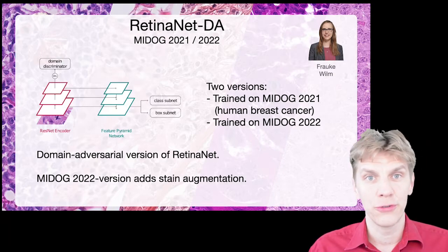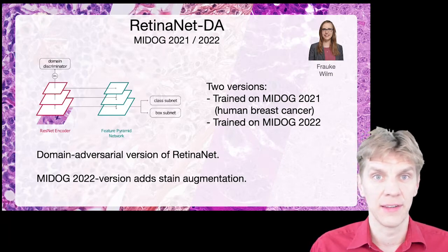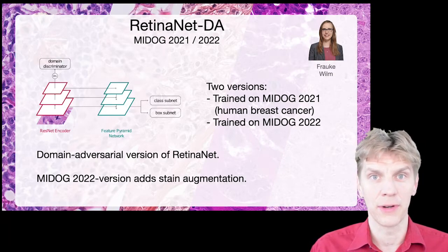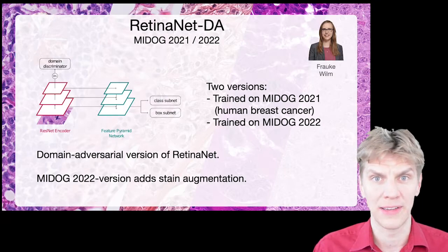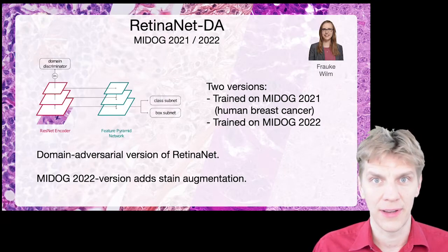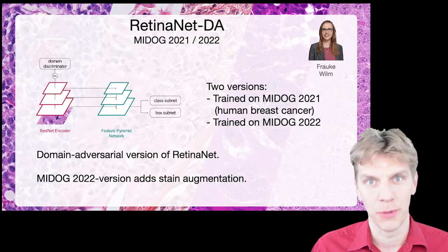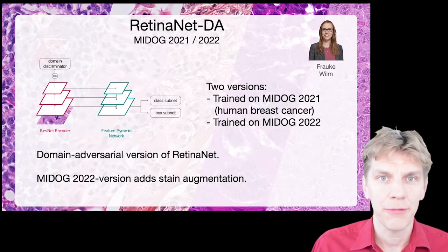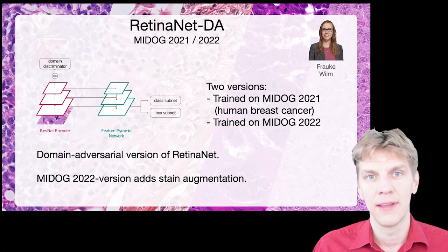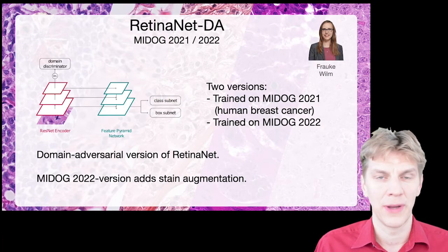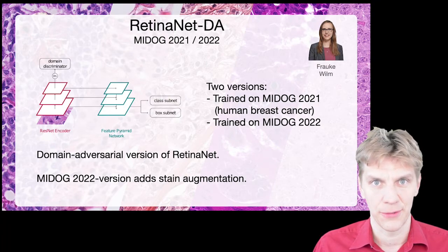We have this in two versions in the baselines. One is trained only on MyDoc 2021, which means it was trained only on human breast cancer data. And then we also have the one that was trained on the MyDoc 2022 dataset.